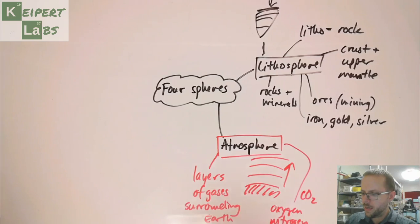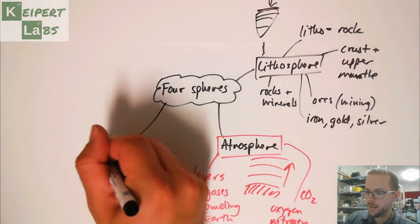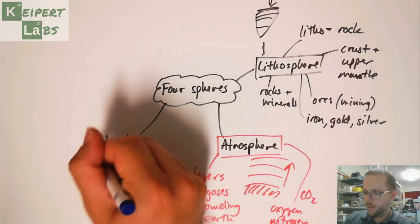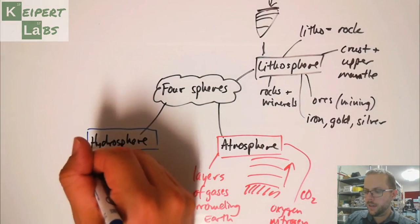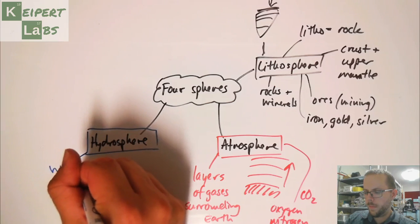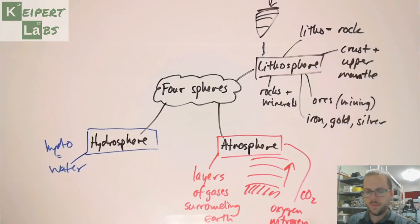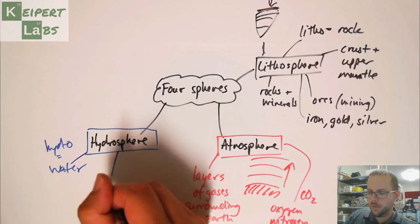Now let's take a look at the hydrosphere. So we're looking at it in terms of hydro means water in Greek. So hydro being water. So we're thinking about it in terms of salt water. So all the earth's water. We've got salt water and we've got fresh water.